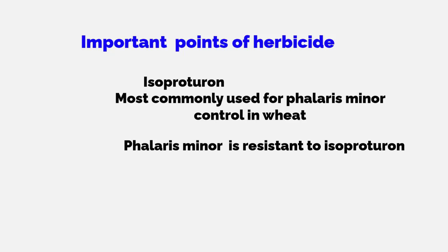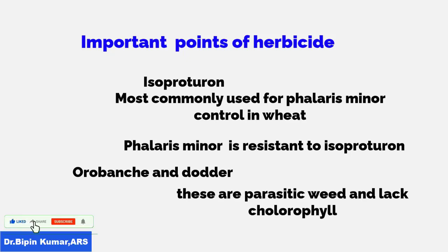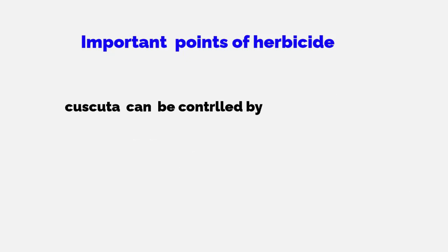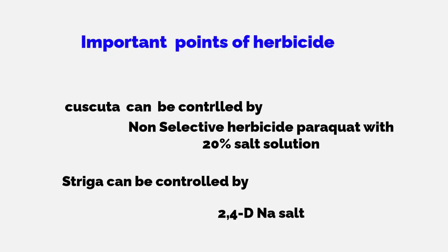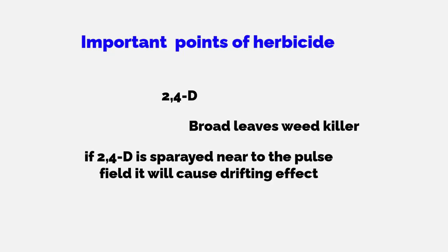Orobanche and Dodder are parasitic weeds in which chlorophyll is absent, whereas chlorophyll is present in Striga and Loranthus. To control Cuscuta, you need to apply a non-selective herbicide like paraquat with a 20% salt solution. To control Striga, 2,4-D sodium salt is the best option.